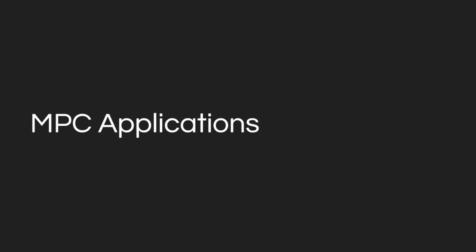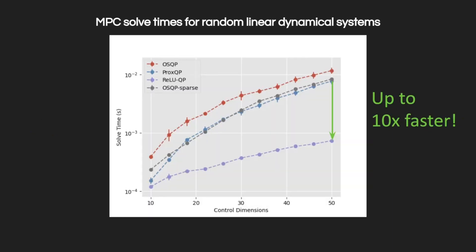We also benchmarked RELUQP on three different MPC applications. First, we stabilized random linear systems of differing sizes with state-to-control ratios of 3 to 1, a horizon of 40 time steps, and control limits. We found that RELUQP achieved up to 10 times speed improvements on high-dimensional systems.